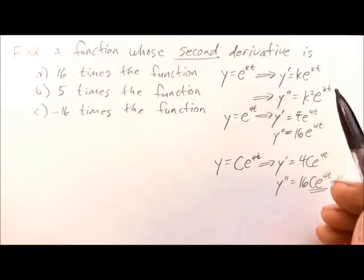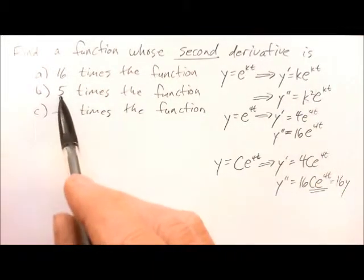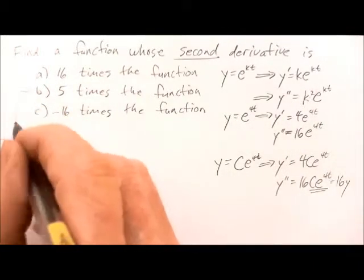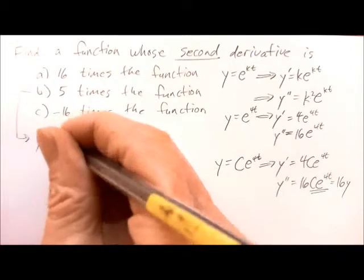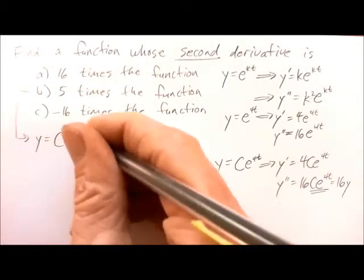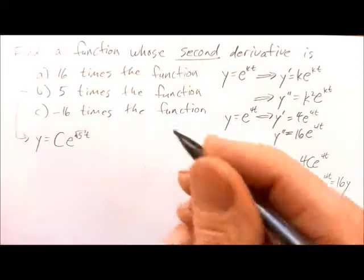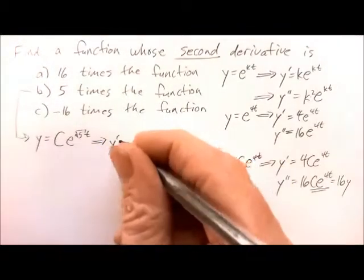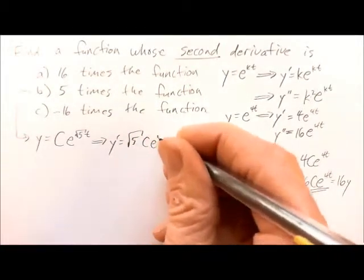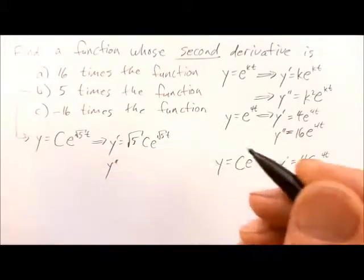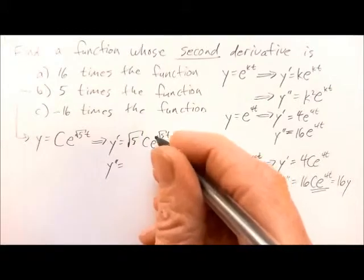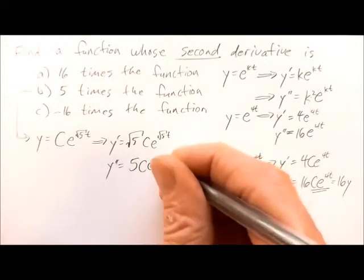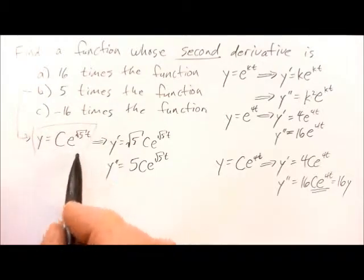For part B, we need k squared to equal 5, meaning k equals the square root of 5. So the solution is y equals c e to the square root of 5 times t. The first derivative is y prime equals root 5 times c e to the root 5t, and the second derivative gives root 5 times root 5, which is 5, times c e to the root 5t. So this function satisfies condition B.